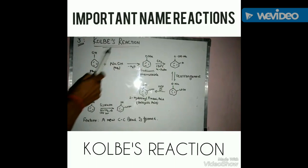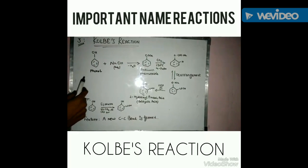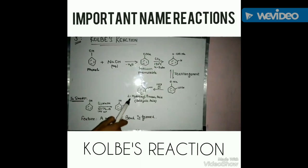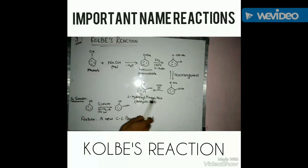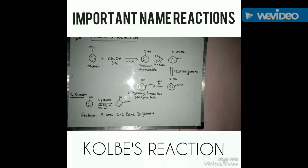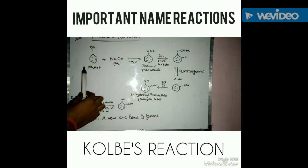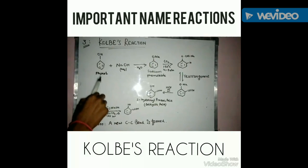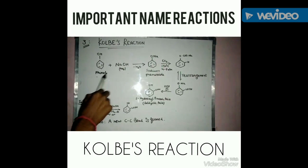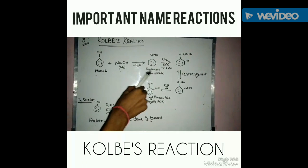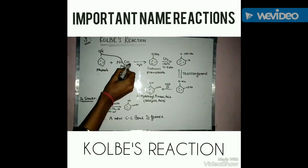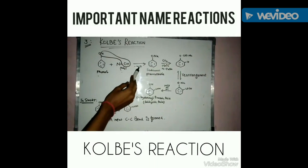The third reaction is Kolbe's Reaction. The initial compound is phenol and aqueous NaOH, and the end product is 2-hydroxybenzoic acid, whose common name is salicylic acid. First, phenol is reacted with aqueous NaOH — since phenol is acidic and NaOH is basic, a salt, sodium phenoxide, is formed along with water as a side product.